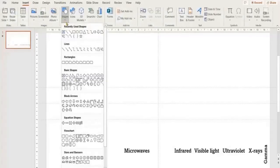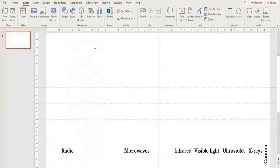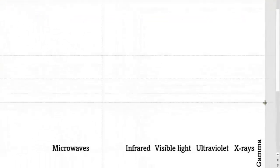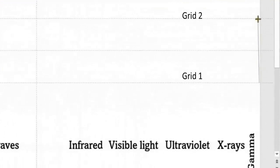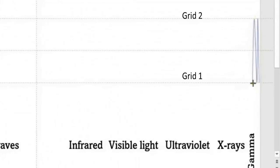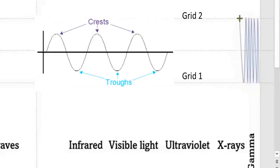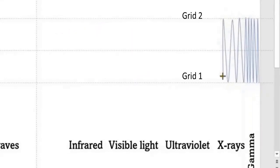Now go to Auto Shapes and pick the Curve shape from Lines. Make a curve starting in the first grid where we are going to draw the gamma rays. Make one more click in the second grid, then come back to the first. Draw the curve so that every click in grid one and grid two makes one trough and crest in the curve.